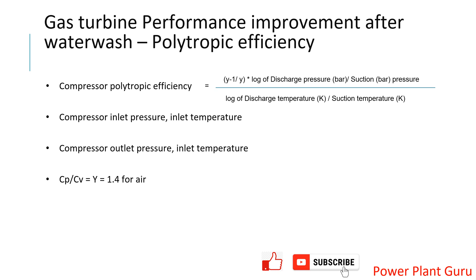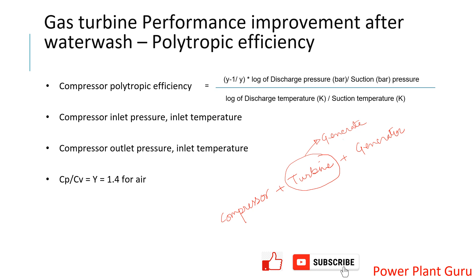In this video we are going to cover how to calculate an important KPI of a gas turbine, which is compressor efficiency. A gas turbine comprises three major components: the compressor, the turbine, and the generator. The turbine is the equipment which generates mechanical energy or power.